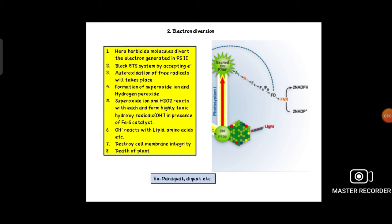When they block the electron transfer system by accepting electrons, the radicals will undergo auto-oxidation. The radicals of paraquat or diquat herbicide will undergo auto-oxidation, then form superoxide ion. When oxygen molecule gets energy, normal oxygen will convert to the superoxide ion.